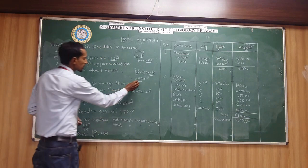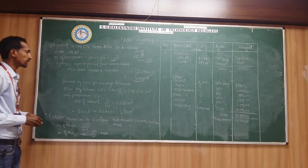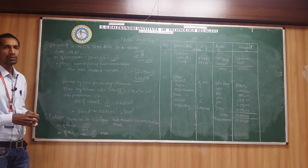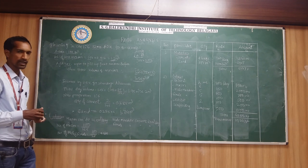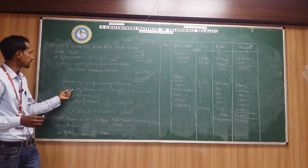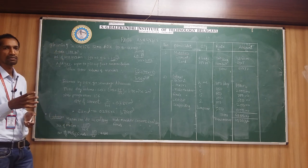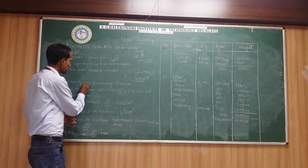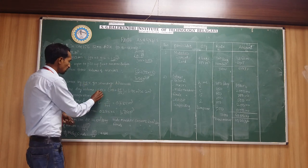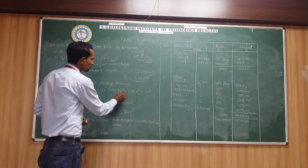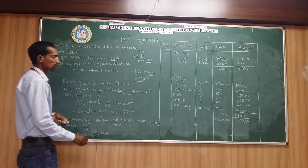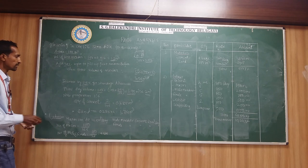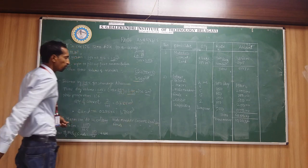We increase by 25% for shrinkage allowances. Shrinkage allowance means that before adding water, the dry volume will be larger — sand has some extra voids before mixing with water. So we add 25% to 1.56 meter cube, giving 1.95 meter cube, say 2 meter cube. So 2 meter cube of dry volume is required to prepare a wet volume of 1.56 meter cube.